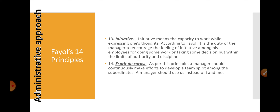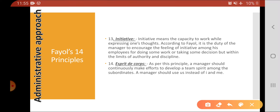The thirteenth principle is initiative. Initiative means the worker should feel satisfied and should have the capacity to express their feelings. Fayol says it is the duty of the manager to encourage the feeling of initiative among employees. This can be achieved through proper communication, letting their thoughts come forward, and telling them about training and how to advance in the company — from both the workers' and the managers' point of view.